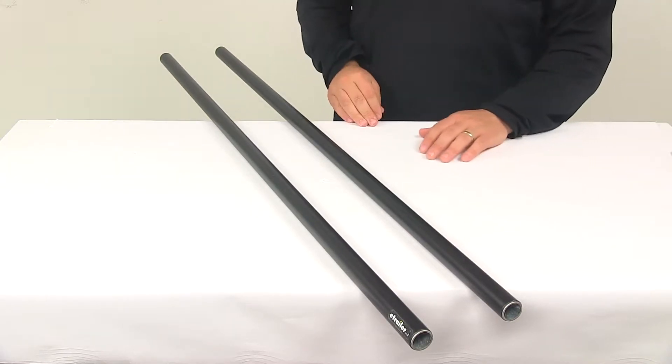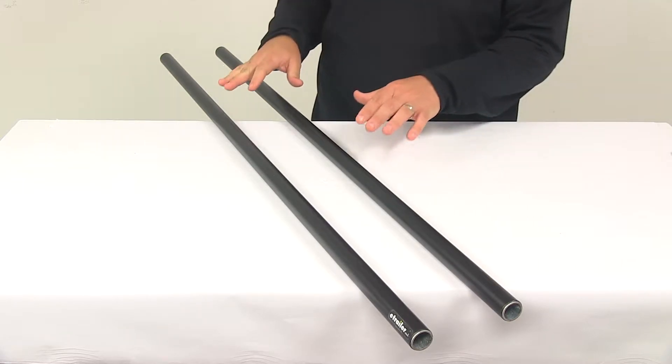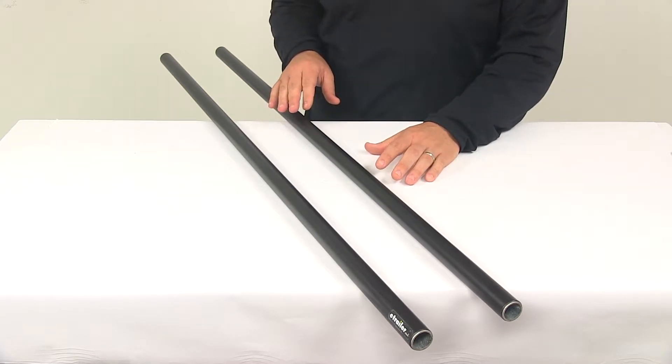Today we're going to be taking a look at the Yakima round crossbars for Yakima roof rack systems. These are multi-purpose crossbars that supply the backbone for your aftermarket roof rack system.